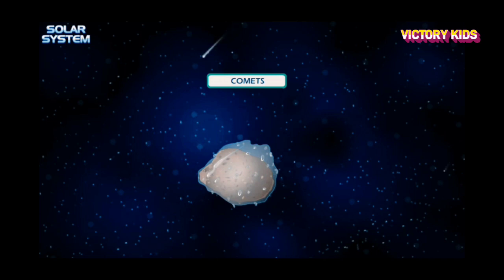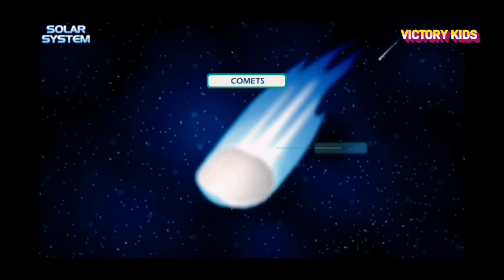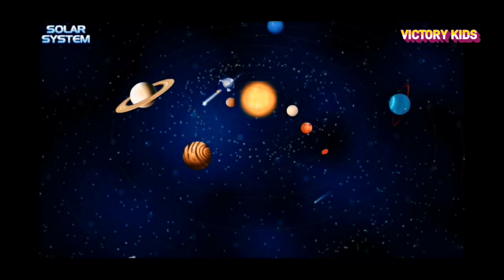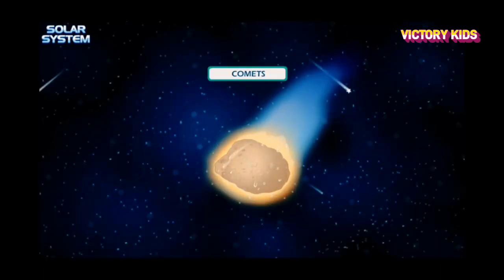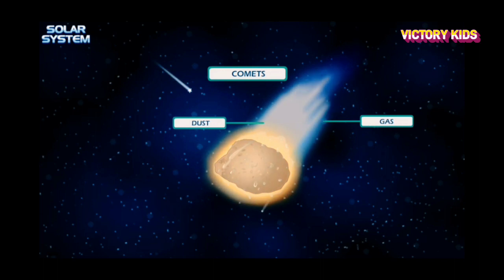Comets are balls of rock and ice that grow tails as they approach the sun. Comets come from far away, an imaginary place at the edge of the solar system. As it moves closer to the sun, the glowing tails are visible. As comets heat up, gas and dust are expelled and trail behind them.